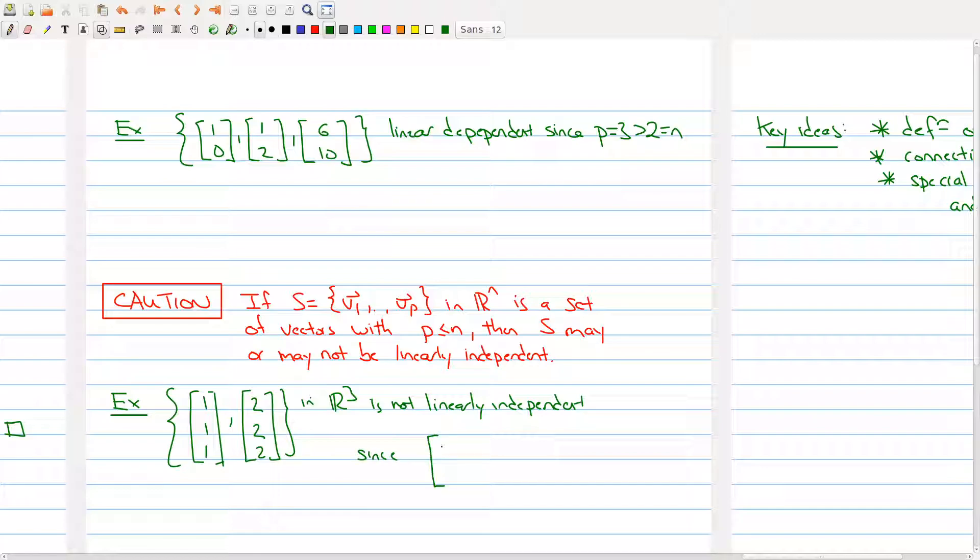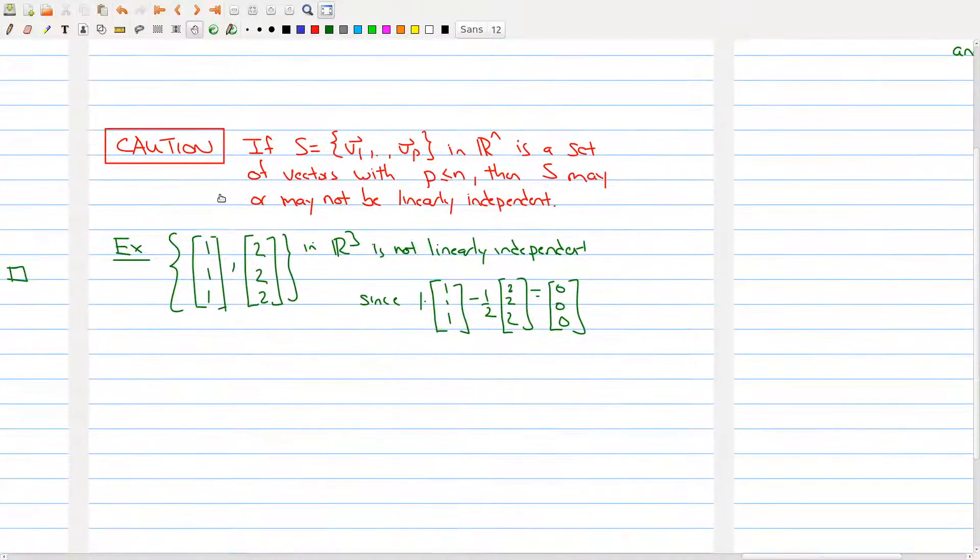So, I have a non-trivial solution to my vector equation. So, here I have two vectors in R3 that are linearly dependent.